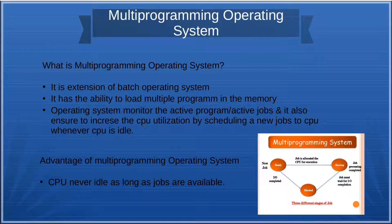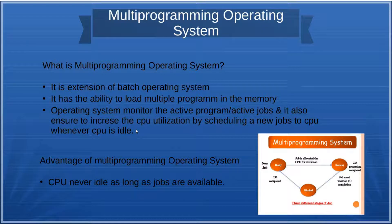In multiprogramming operating system, the CPU is never idle. When a job comes to the CPU and requires an IO operation, it goes to the IO part. In batch operating system, the CPU would be idle during that time. But in multiprogramming operating system, when a job goes to IO, another job comes to the CPU.